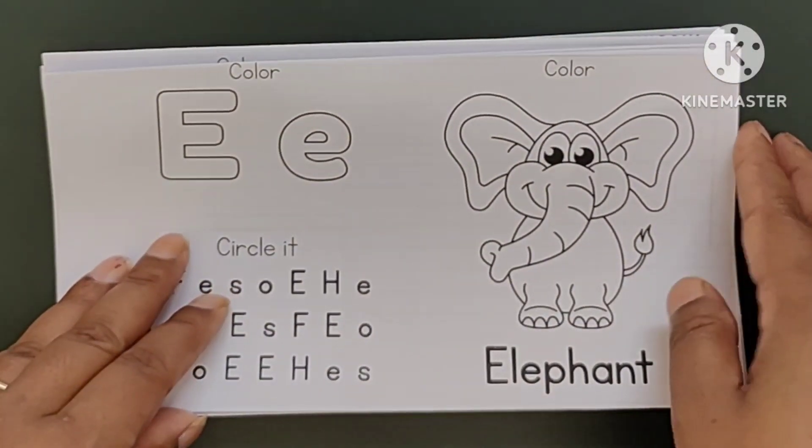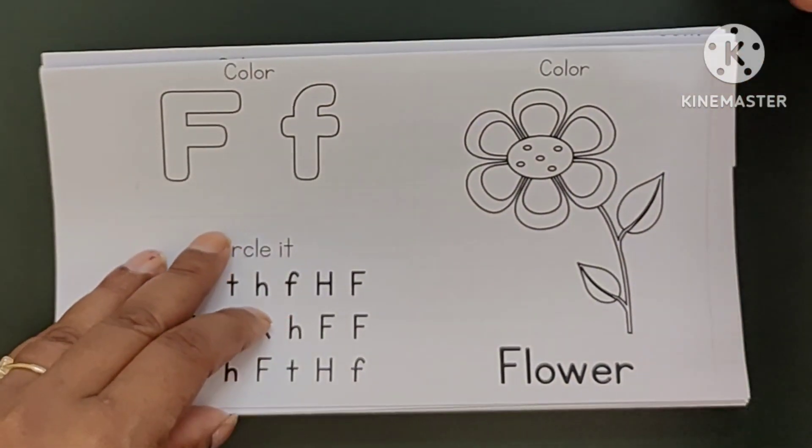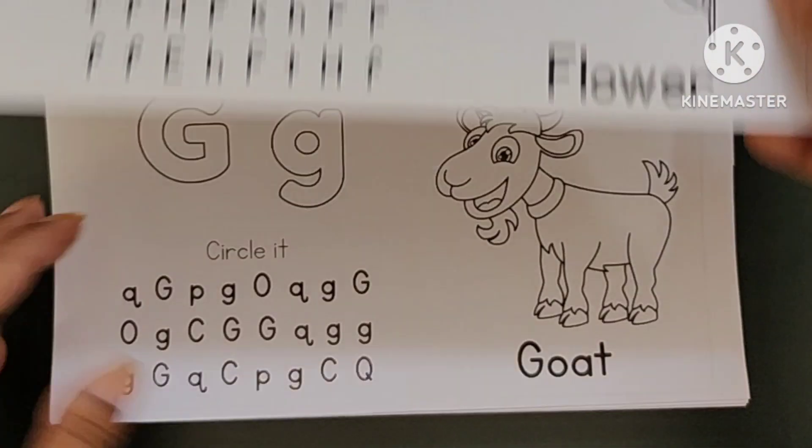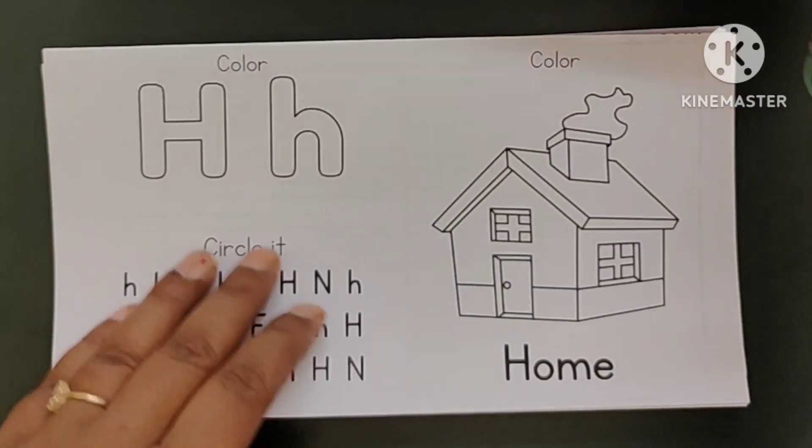D. D for Drum E. E for Elephant F. F for Flower G. G for Goat.